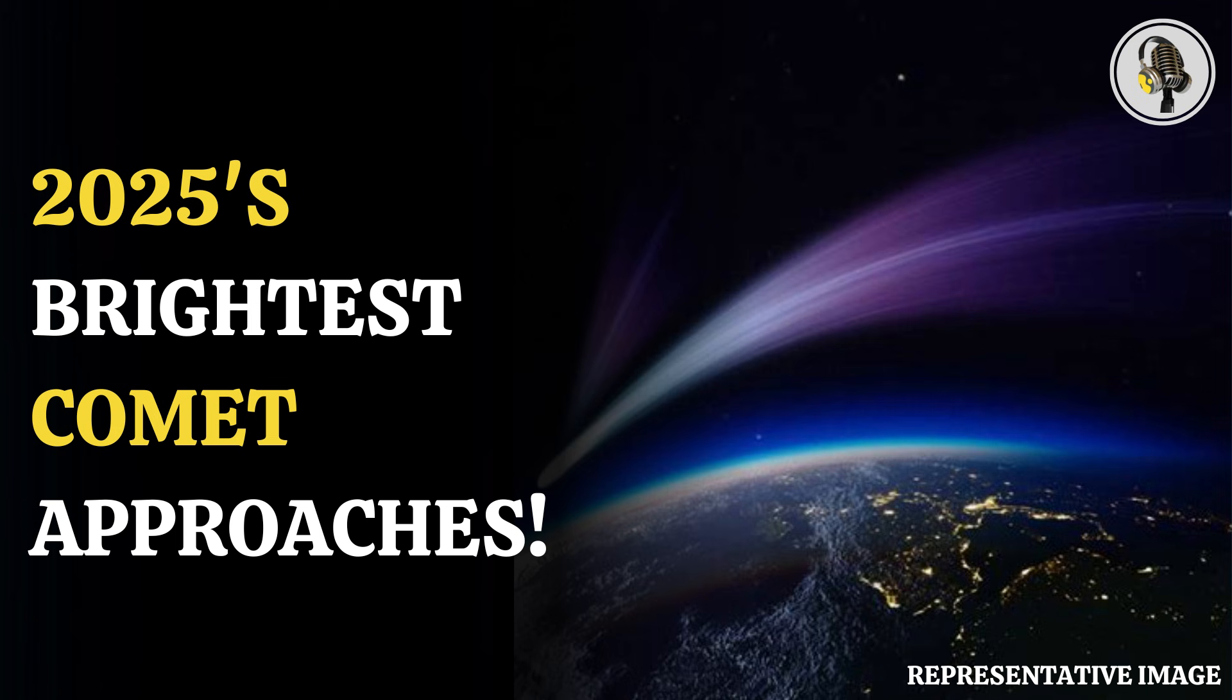Comet Atlas G3 will reach its closest point to the sun on January 13, 2025. At perihelion, the comet will be just 8.3 million miles from the sun. On the same day, Comet G3 will also appear at its brightest from Earth.